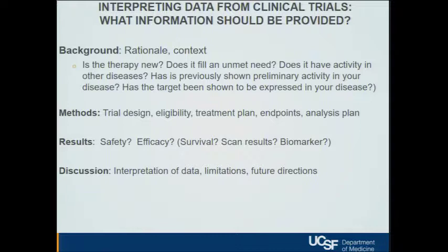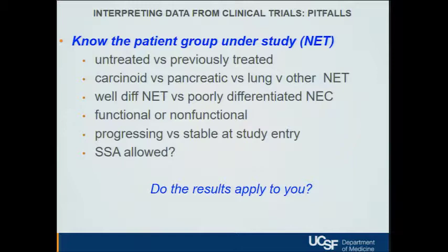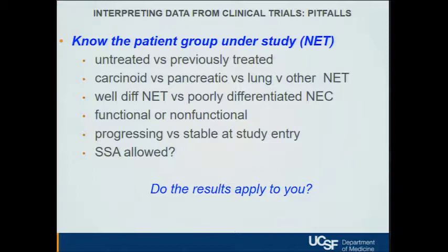When reading results — whether an abstract at a meeting, something on a website or blog, or a press release — one of the most important questions to ask is: does it apply to you? In neuroendocrine tumors, some studies are for untreated patients, some for previously treated. Some are specifically for carcinoid, pancreatic neuroendocrine, or lung NETs but not other groups. Some are for well-differentiated tumors, others for poorly differentiated — those are really different disease groups. Some are for functional tumors that make hormones, others for non-functional. Some require progression at entry, some don't. Some allow somatostatin analogs, others don't.